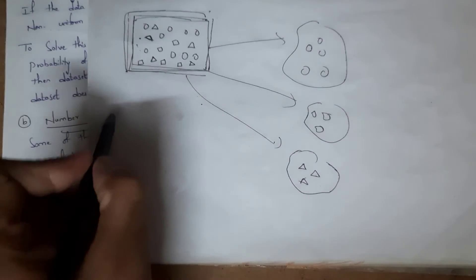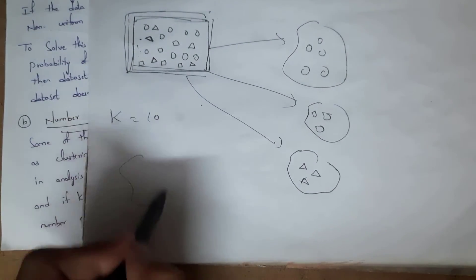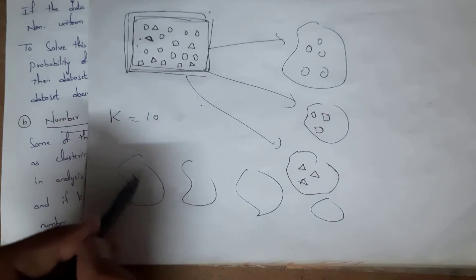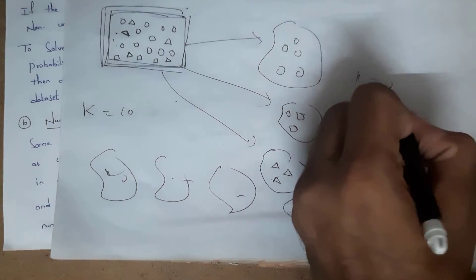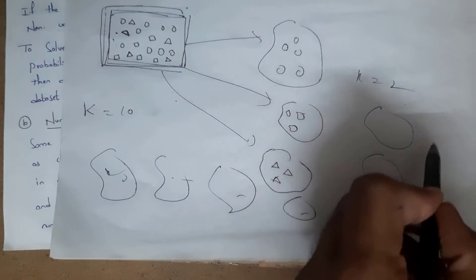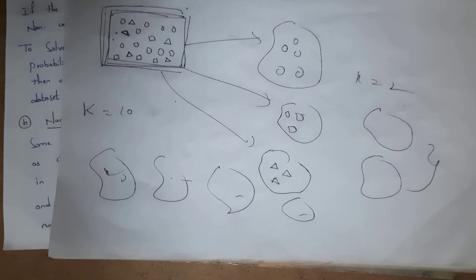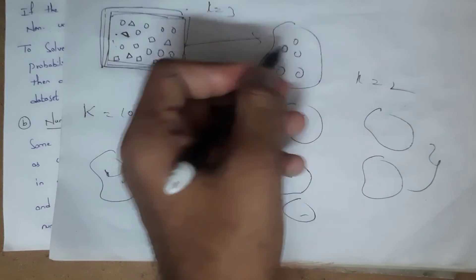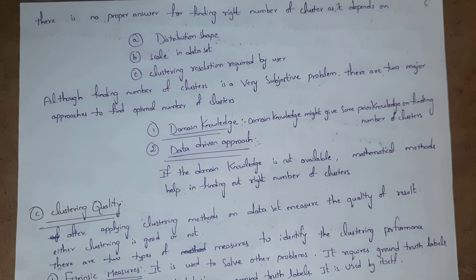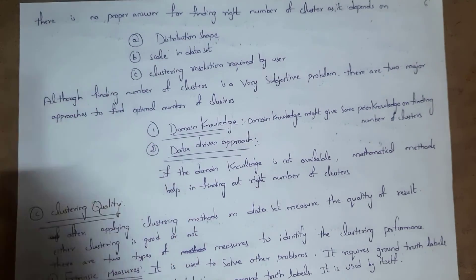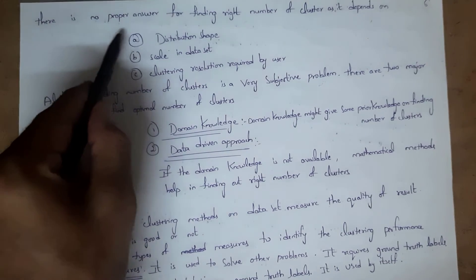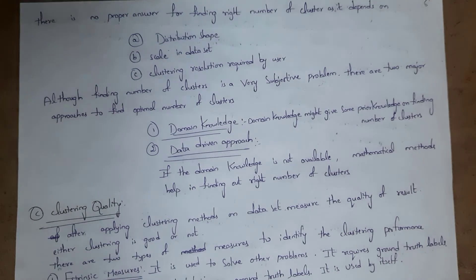For example, if the value of K is 10, then it forms 10 clusters, and we need to place the data in those 10 clusters, which is not correct. And if the value of K is very low — for example, K equals 2 — then we need to place the data in just two clusters, so the result is not accurate and objects are not placed correctly. So the value of K must be optimal; if K is 3, then the data objects are placed correctly. There is no proper answer for finding the right number of clusters because it depends on distribution shape, scale in the dataset, and the clustering resolution required by the user.